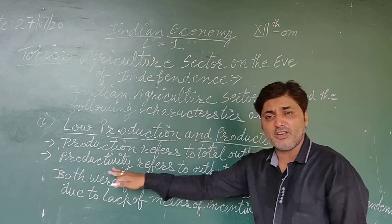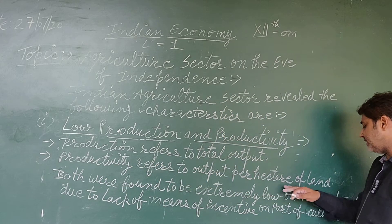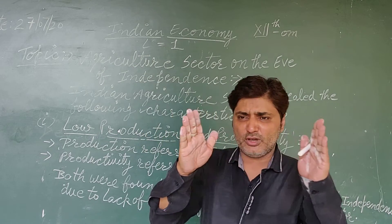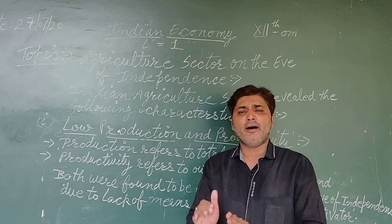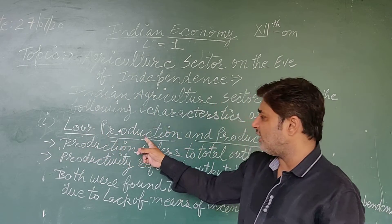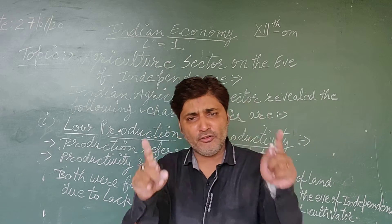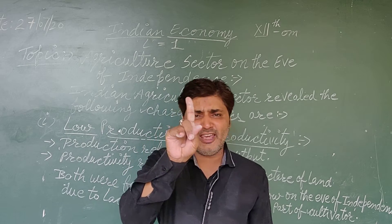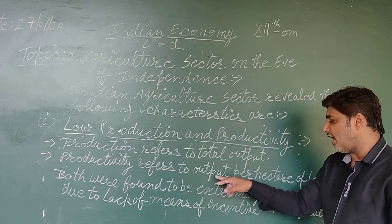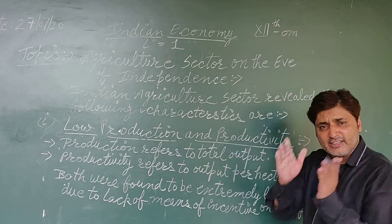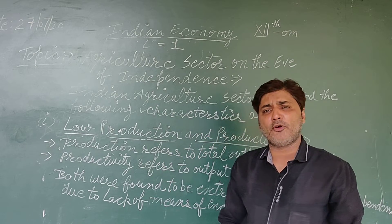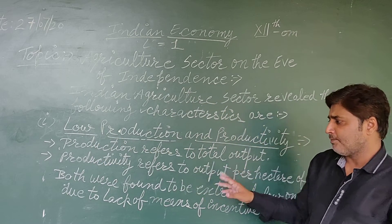Productivity refers to the output per hectare of land. For example, if we have 5 hectares of land and we produce 10 quintals of wheat in total, then productivity measures how much wheat is produced per hectare. The total output from all the land together is called production.